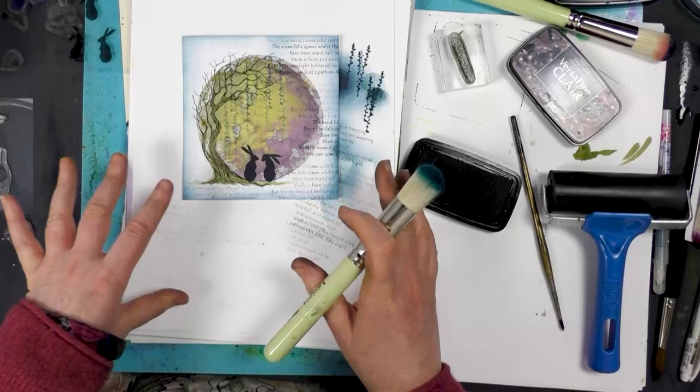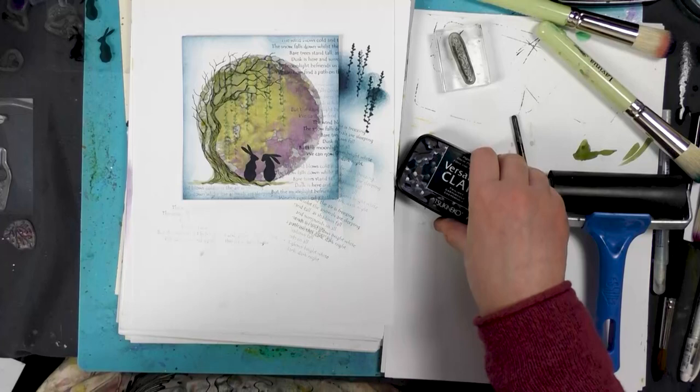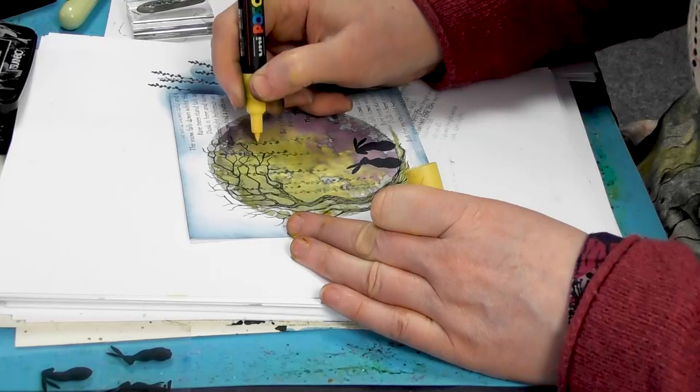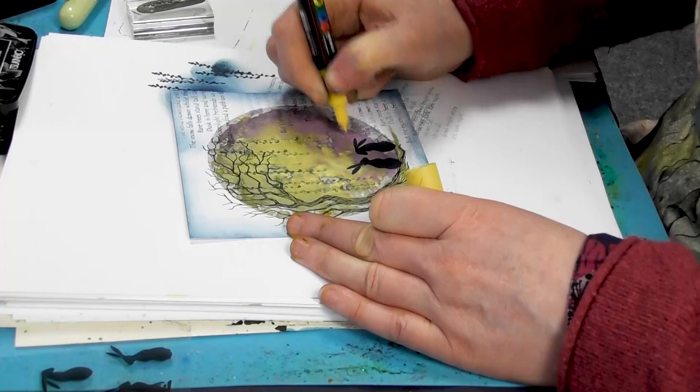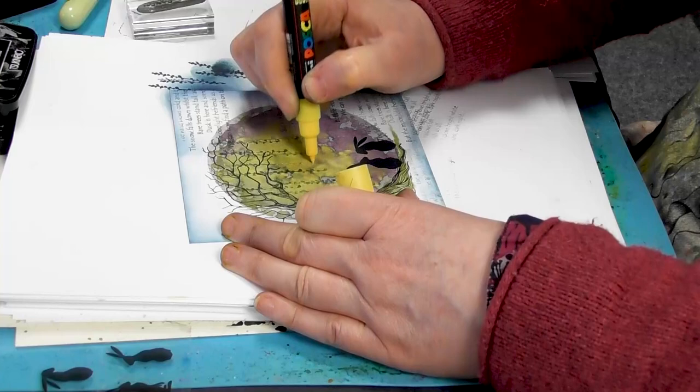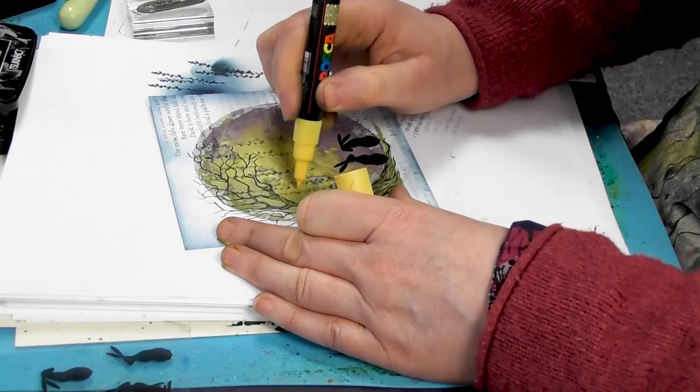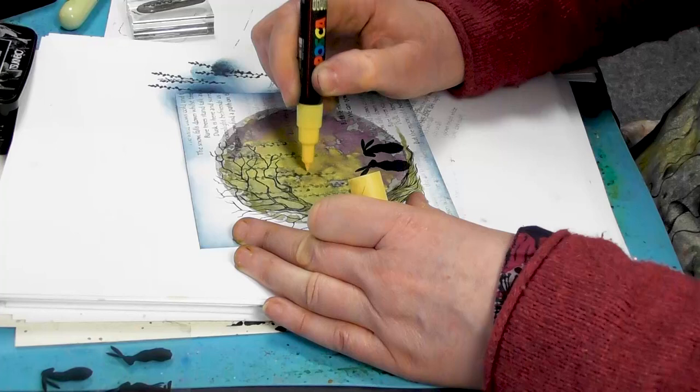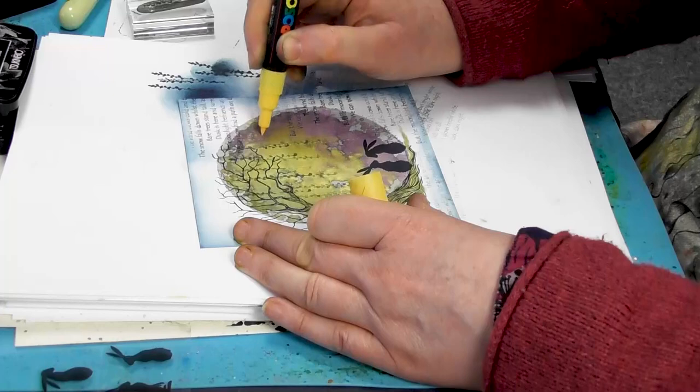So let's have a look. We've got a Posca pen here, and all I'm going to do is put a few tiny dots coming down from the tree. I've used yellow, but you can use any color you like. It's all these little elements that really add the detail to the card, which look very effective.